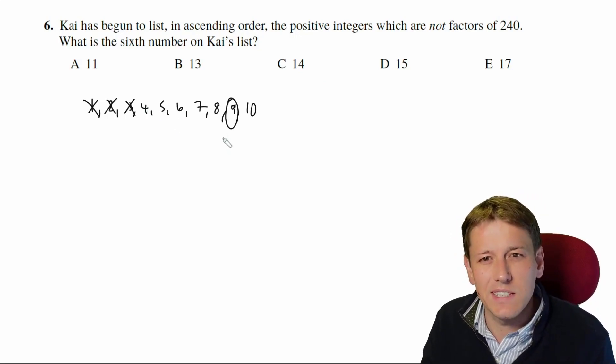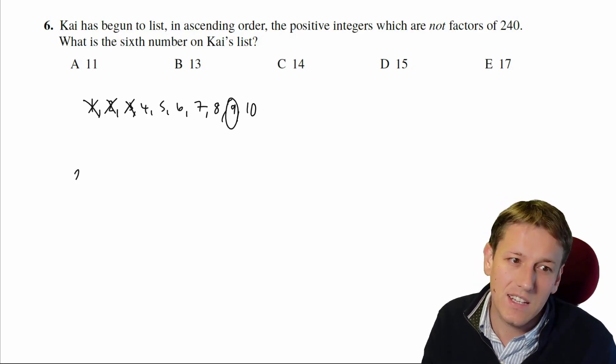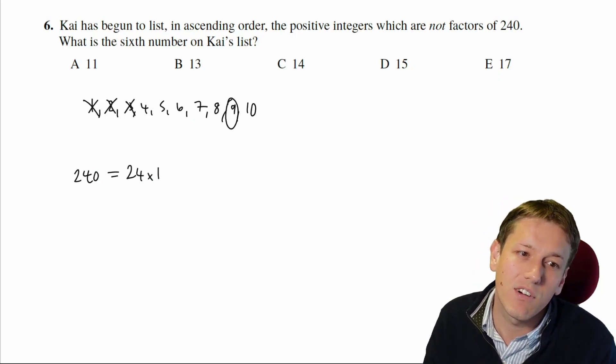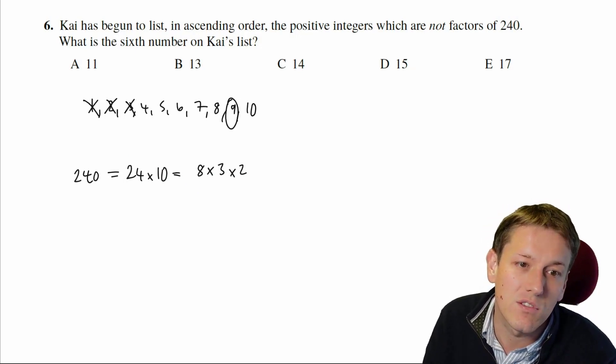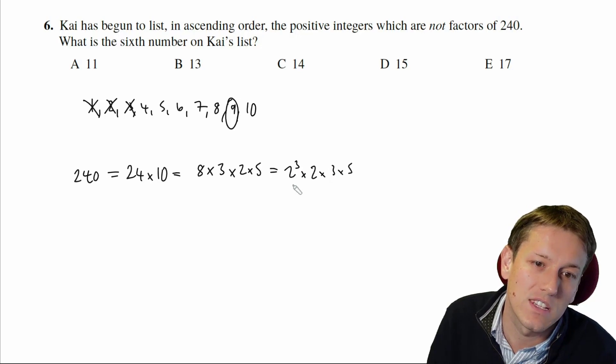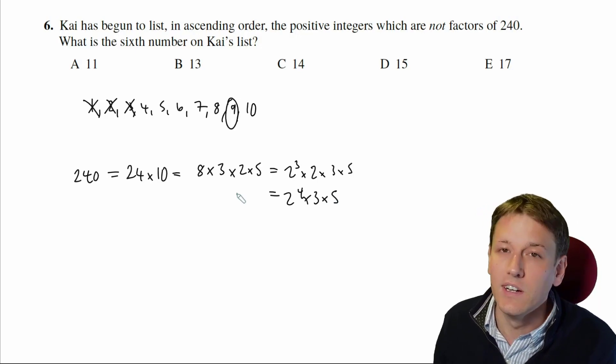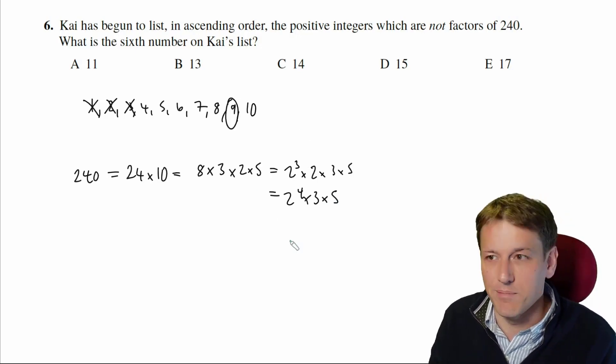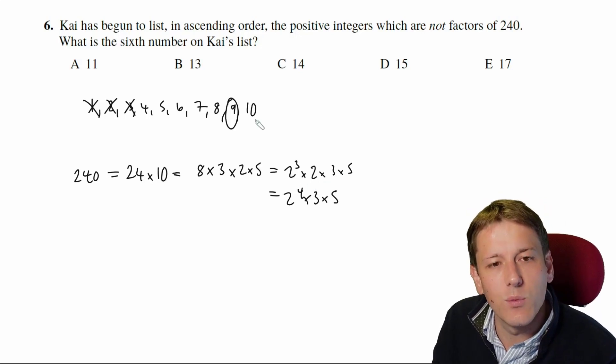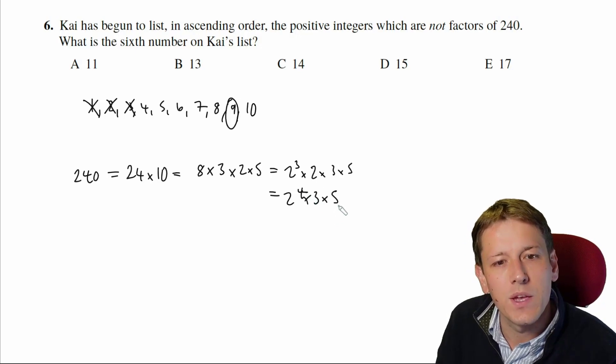Now, as I keep going through this list, I can just check them one by one. You might like to have the prime factorization of 240 handy. So I could write it as 24 times 10, or I could write it as 8 times 3 times 2 times 5. 8 is 2 cubed, so I've got 2 cubed times 2 times 3 times 5, or 2 to the 4 times 3 times 5. Do it with a factor tree if you prefer, but the more you do this, the more you'll make arguments like this. And actually I can see now where the numbers are factors pretty quickly, because I've just got to see if I can get them out of the prime factorization.